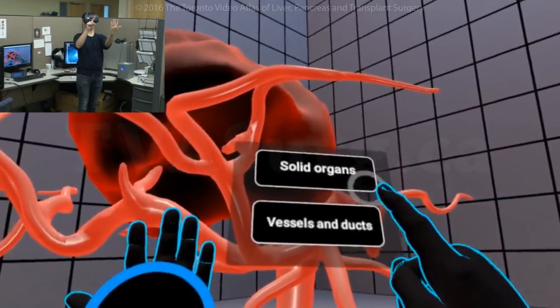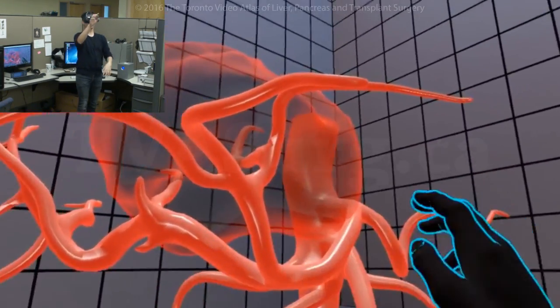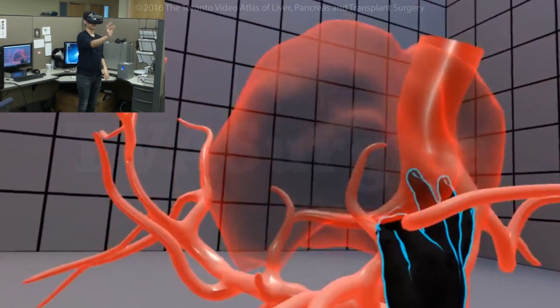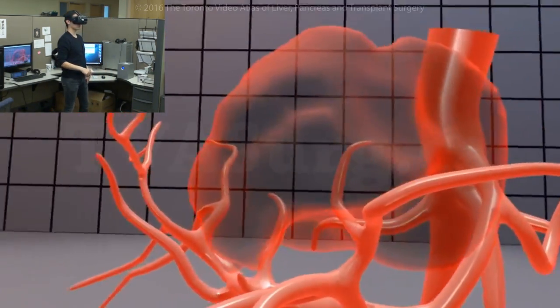Now, if we turn the tumor to transparent, like so, we can actually see there's two little branches here, here and here, that are enveloped by the tumor.